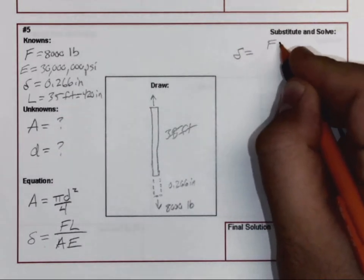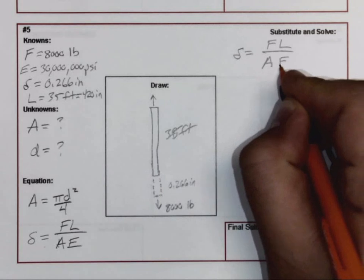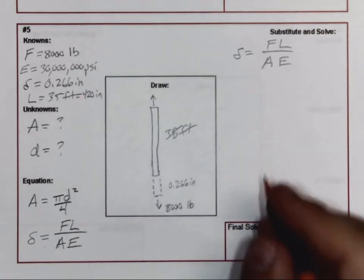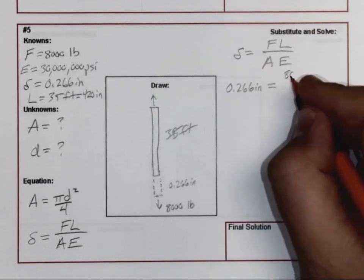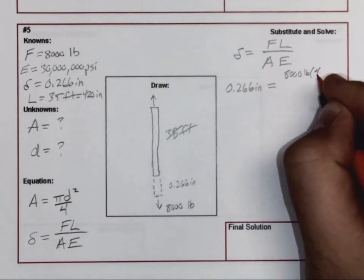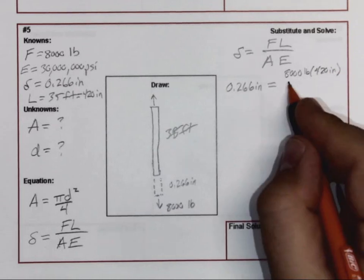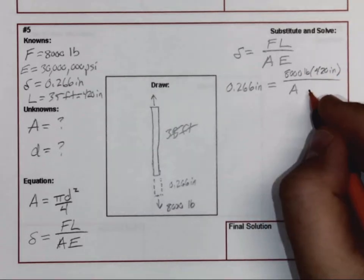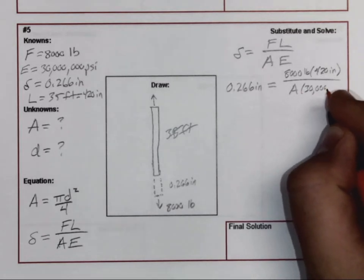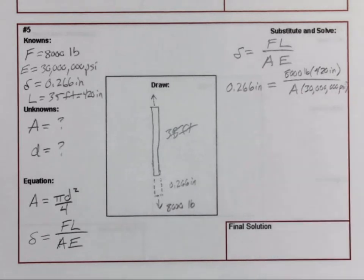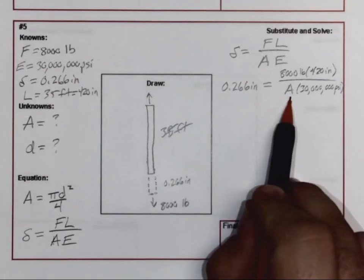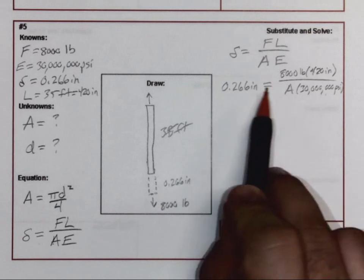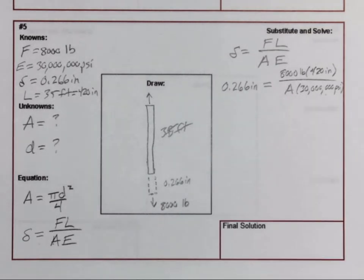Stretch is equal to force times length over area times the modulus of elasticity. Start plugging in values: 0.266 inches equal to 8,000 pounds times 420 inches divided by A and then times the modulus of elasticity, 30,000,000 PSI.